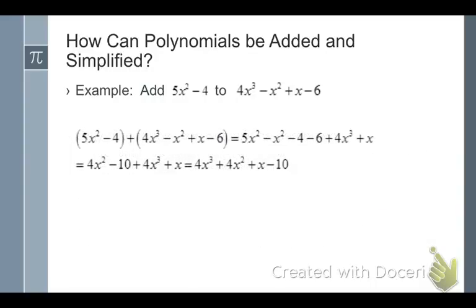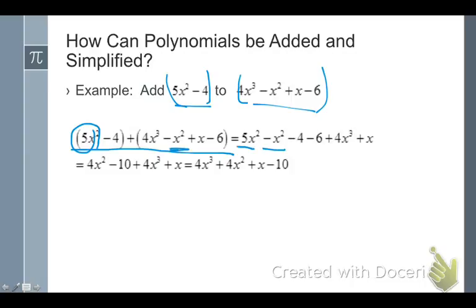So here is how the addition can be written out. That's what you're doing. Now notice I put parentheses around each. This becomes really important when you do subtraction. But here's your first polynomial and the first set of parentheses, second polynomial there. So I look at the 5x squared and I say, are there any x squared terms? Yeah, I have a 5x squared and a negative x squared. So I'm going to combine those. A negative 4 and a negative 6 get combined.